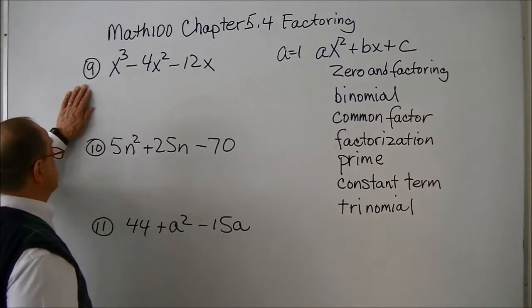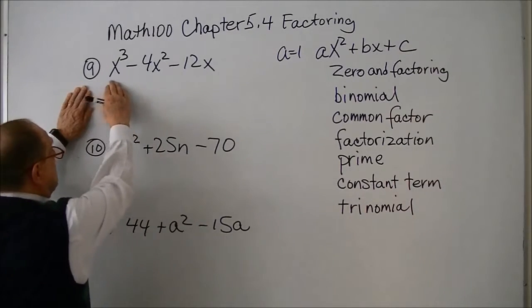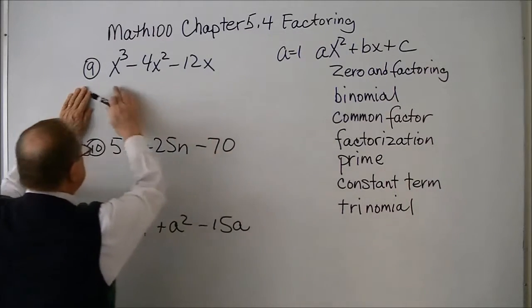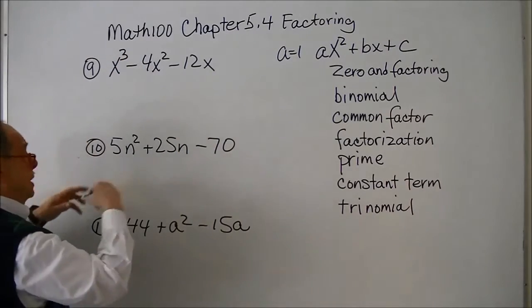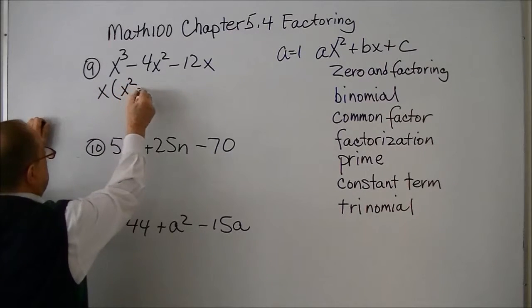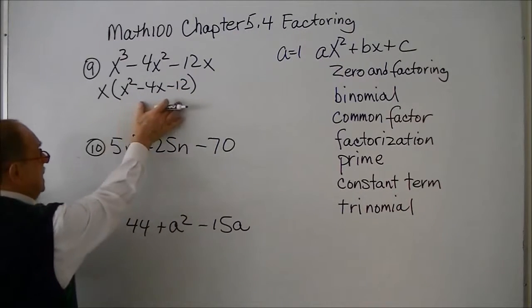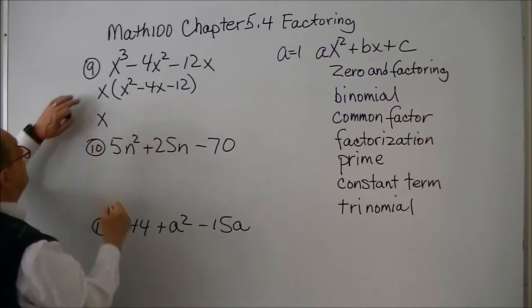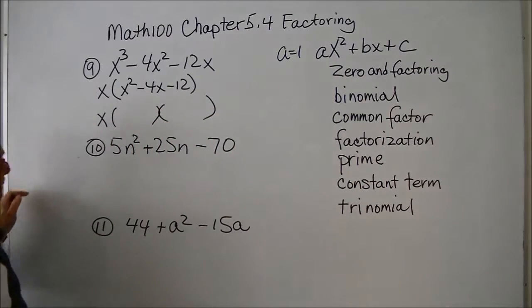For number 9, step one: is it in standard form? Yes. Is there a common factor? Yes — there's an x that's common, so you have to factor that x out first. Now it's in standard form with no common factor. You must include this x in your factorization, then put two sets of parentheses to undo the FOIL.